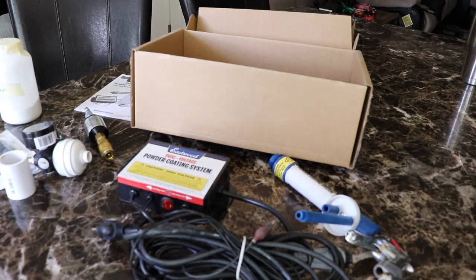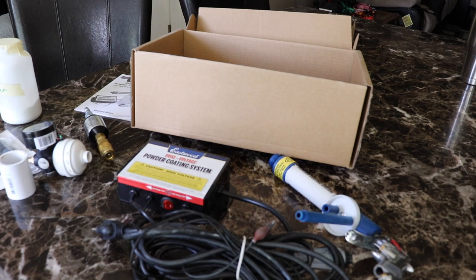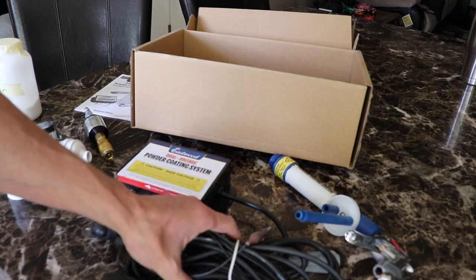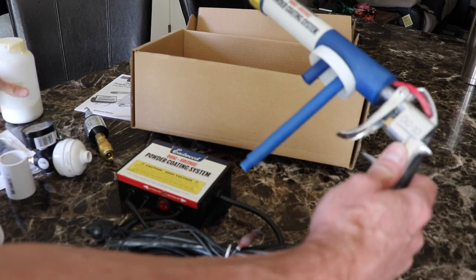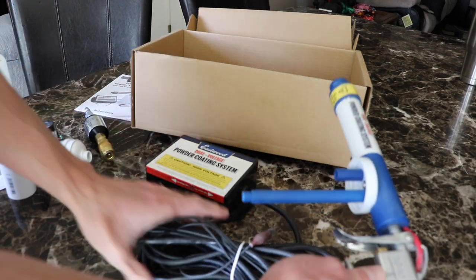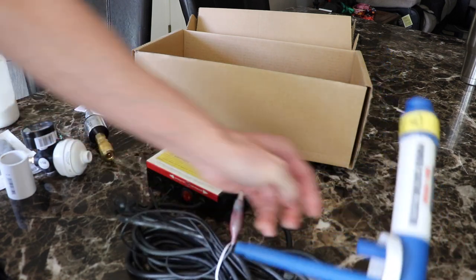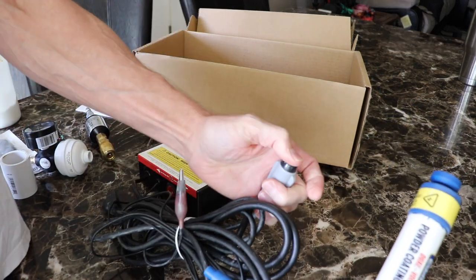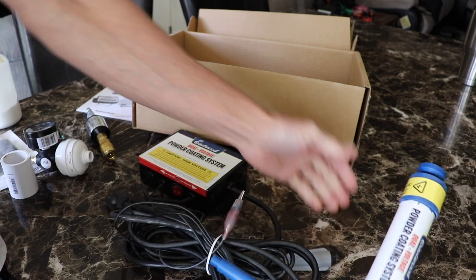Alright, so this is the dual voltage powder coating system. This is what it comes with. The gun, one bottle, your controller, and just the wires, the grounding wire, and it has a trigger wire to activate it.